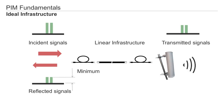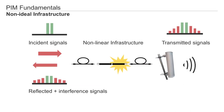What is PIM and where does it come from? In an ideal infrastructure, signals are input on one side and output on the other side in the same form, but with a lower level because of the attenuation of the coax cables and components. In a non-ideal infrastructure, if there are any connectivity issues at all on the RF line, we talk in terms of a non-linear infrastructure.